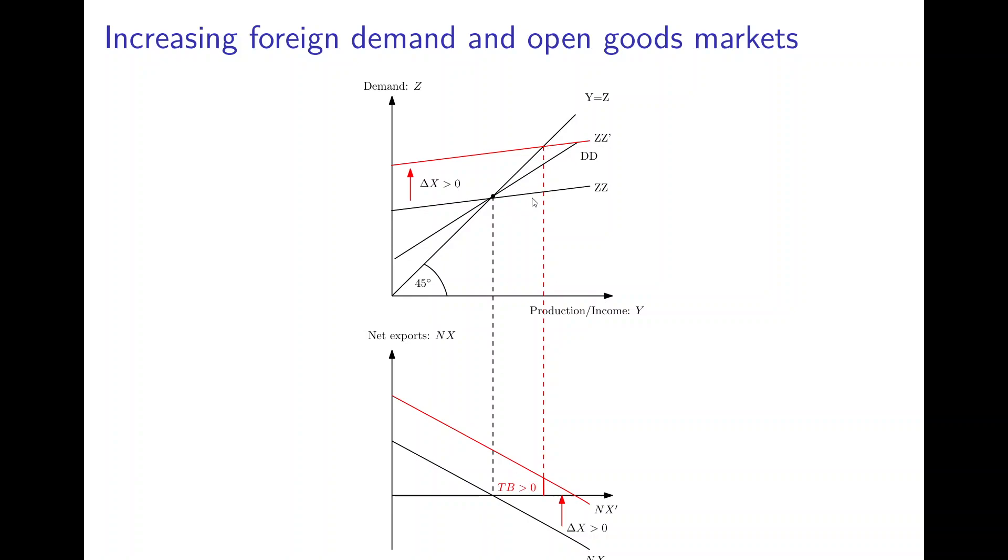But overall this additional production is particularly for the foreign economies, and that means that the trade balance will become positive and the home country will export more than it imports, so that the initial trade balance turns into a trade surplus.